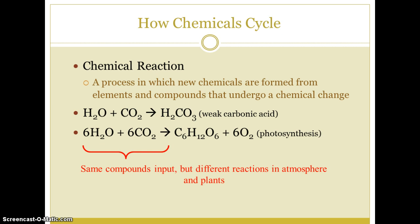A chemical reaction is a process in which new chemicals are formed from elements and compounds that undergo a chemical change. In the examples given, the same compounds — water (H₂O) and carbon dioxide (CO₂) — are inputs, but different reactions occur: in the atmosphere yielding a weak carbonic acid (H₂CO₃), and in plants yielding glucose (C₆H₁₂O₆) and oxygen (O₂) through photosynthesis.